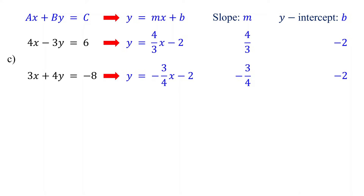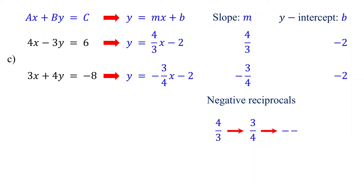Now compare the slopes and y-intercepts. Since the slopes are not the same, they cannot be parallel lines. But notice that they are negative reciprocals. To check if the two slopes are negative reciprocals, take the reciprocal of the first equation slope and change its sign. If it matches the second equation slope, then they are negative reciprocals. The slope of the first equation is 4 thirds. Taking its reciprocal gives 3 fourths, and changing the sign gives negative 3 fourths, which matches the slope of the second equation. So the slopes are negative reciprocals.